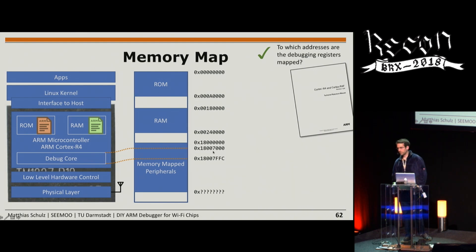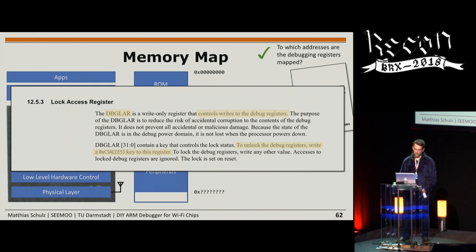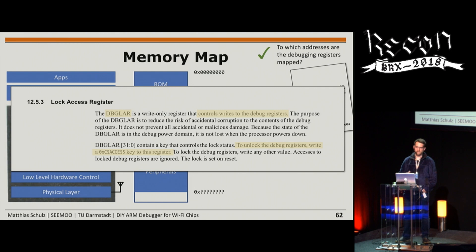There are more obstacles. Debugging registers on ARM processors are normally not directly accessible — to prevent accidental writes, you must first unlock access by writing a magic value into the lock access register. We tried writing this magic value from a custom ioctl handler after the firmware initializes and enables interrupts, but the firmware crashed.